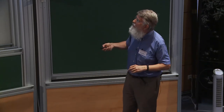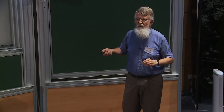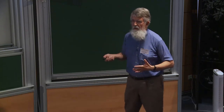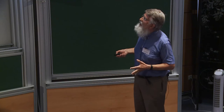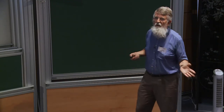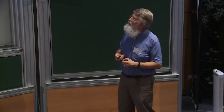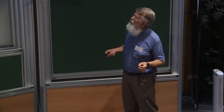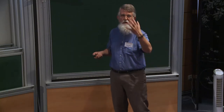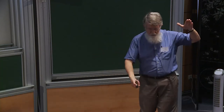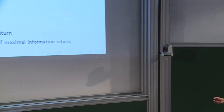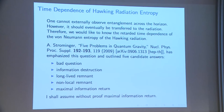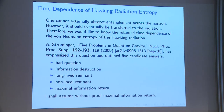I'm not going to solve this problem here. It makes assumptions, particularly local quantum field theory outside the horizon — in quantum gravity, we don't have locality, so at least one assumption is almost certainly not true. You cannot externally observe entanglement across the horizon because you can't see across it, but it should eventually be transferred to the radiation. One thing we'd like to know is the retarded time dependence of the von Neumann entropy of the Hawking radiation. Strominger raised this question and gave five candidate answers: bad question, information destroyed, long remnant, non-local remnant, or maximal information return.